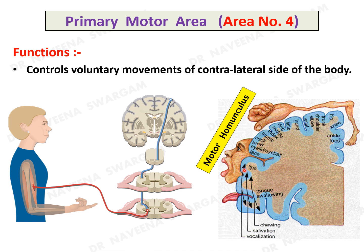The point to be understood here is that the cortex controlling the skillful movements of the hand, face, lips, and tongue occupies a larger surface area on the primary motor area. This means the cortical extent of different body parts depends on the skillfulness of movements rather than the bulk of the muscles.